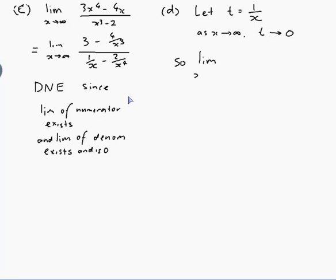So the limit as x→0 of sin(1/x) is the same as the limit as t→∞ of sin(t). That limit does not exist, because as t goes to infinity, sine just continues to wiggle back and forth between 1 and -1, so it doesn't go to any particular value. Therefore, this limit does not exist.